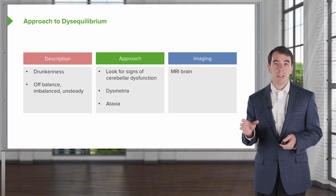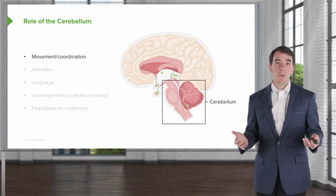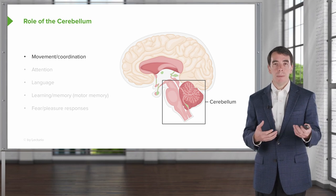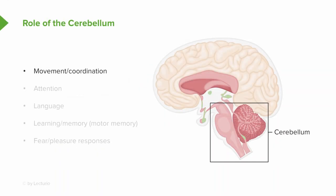When we think about the cerebellum, most of us think about its importance in motor movement and coordination — the cerebellum modulates motor movement and helps us remain coordinated. But it also does a number of other things. It coordinates our attention, helps coordinate language and language processing, and is important in learning and memory, particularly motor memory, as well as fear and pleasure responses. The cerebellum has been called the mini-brain and helps coordinate most brain functions.